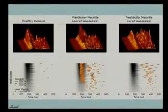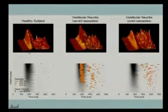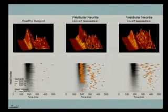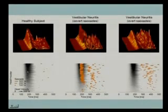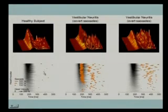This is simply another way of showing when covert and overt saccades occur. Here is a healthy subject showing the profile of eye velocities, and in grey we show increasing head velocity — the darker it is, the higher the velocity. You can see the very few corrective saccades that occur in the normal subject.